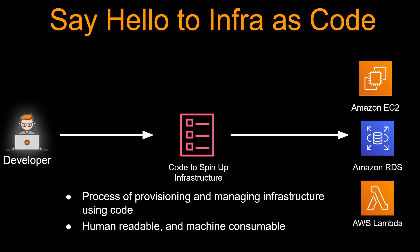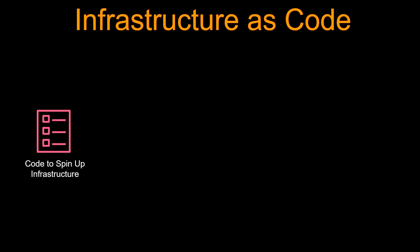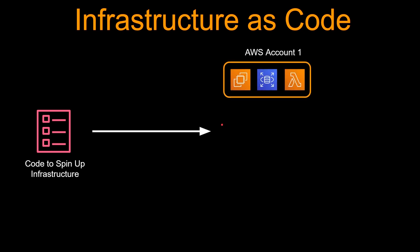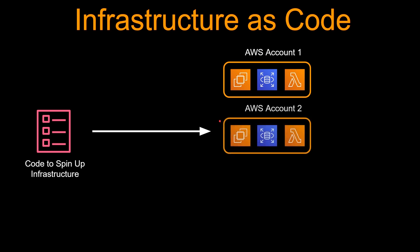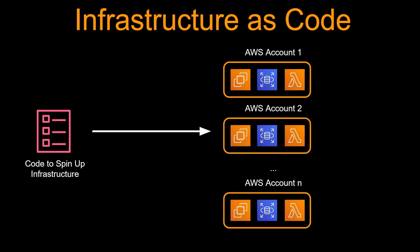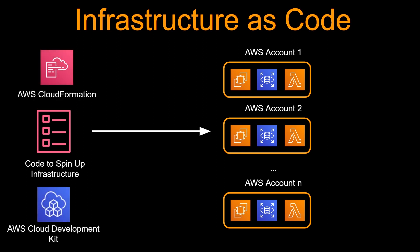Infrastructure as code is human readable and machine consumable. Since it is machine consumable, you can rerun the same code in multiple AWS accounts and spin up the same infrastructure without going into the console of all those accounts and spinning things up manually. In AWS, there are two services which let you codify your infrastructure: one is AWS CloudFormation, and the newest one is AWS CDK, or AWS Cloud Development Kit.